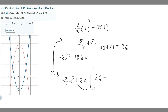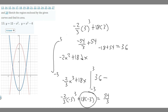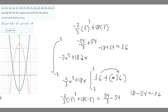Now we subtract whatever minus 3 plugged in gives. Minus 2 over 3 times minus 3 cubed plus 18 times minus 3: minus 3 cubed is minus 27, multiplied by minus 2 over 3 gives 54 over 3, which is 18. And 18 times minus 3 is minus 54. So we get 18 minus 54, which is minus 36. Therefore we have 36 minus negative 36, which is 36 plus 36 equals 72. The area between these two curves is 72.